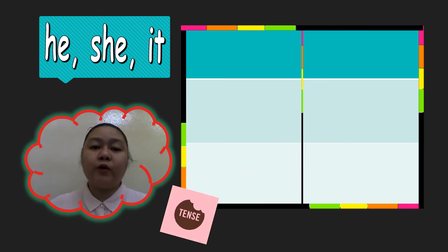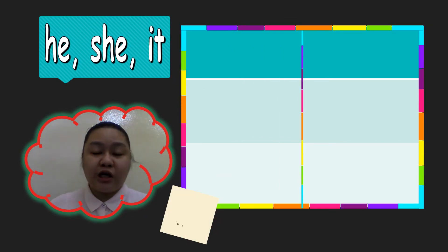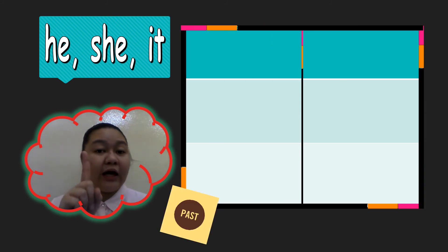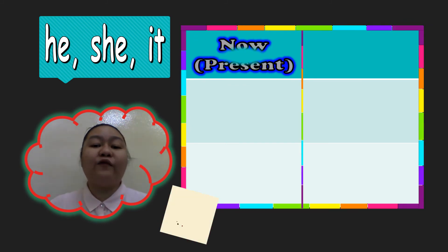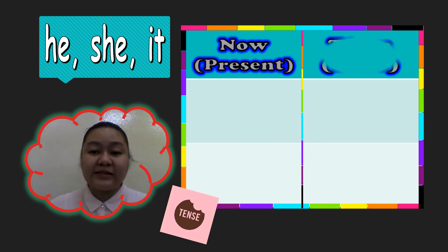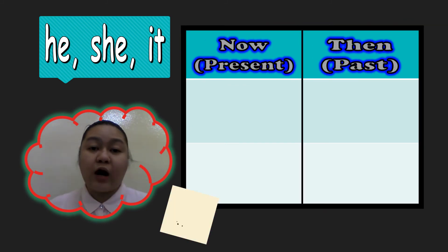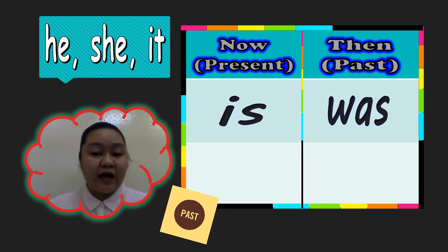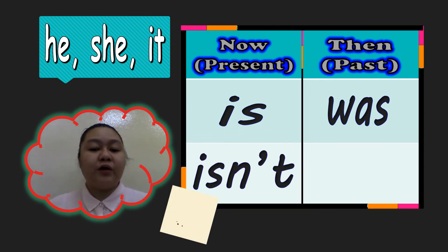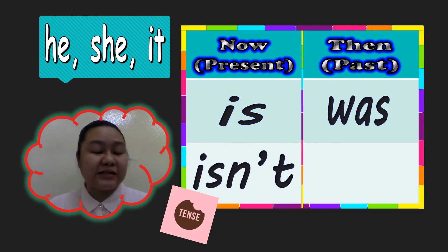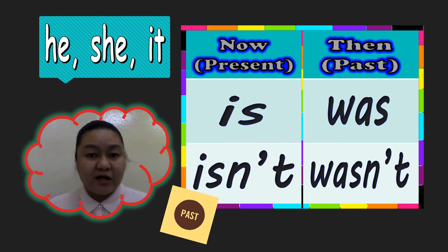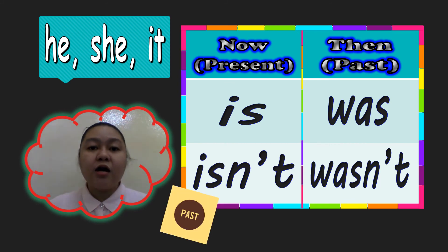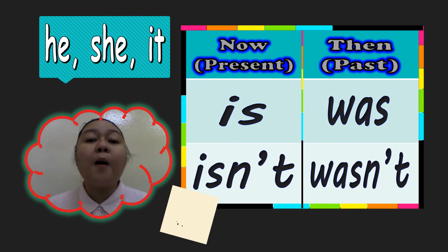If you are using 'he,' 'she,' or 'it' — which is singular, meaning only one — in the present you use 'is,' and in the past you use 'was.' If you use 'isn't,' then you use 'wasn't.' Remember, this is for singular pronouns.